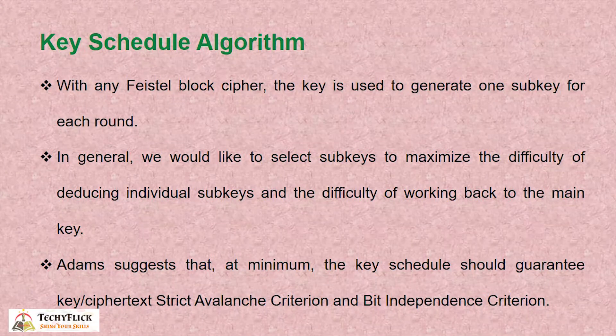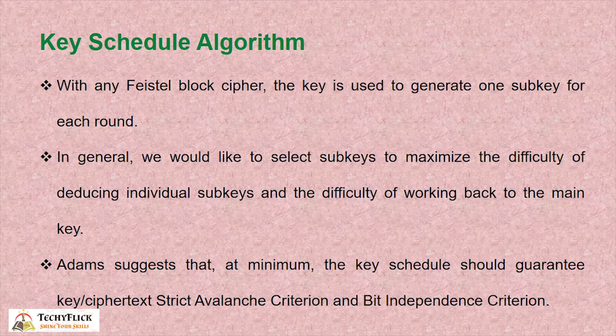Third, the key scheduling algorithm. With any Feistel block cipher, the key is used to generate one sub-key for each round. In general, we would like to select sub-keys to maximize the difficulty of deducing individual sub-keys and the difficulty of working back to the main key. Adams suggests that at minimum the key schedule should guarantee key and ciphertext Strict Avalanche Criterion and Bit Independence Criterion.